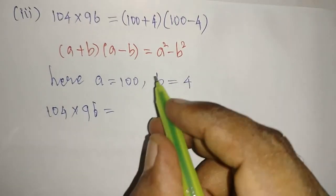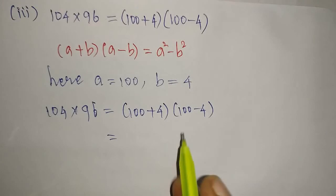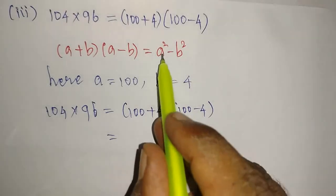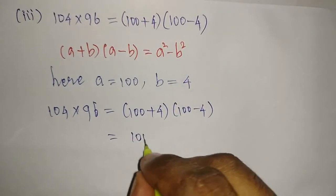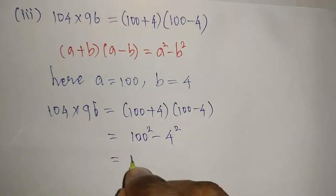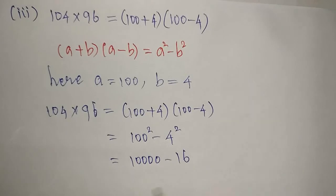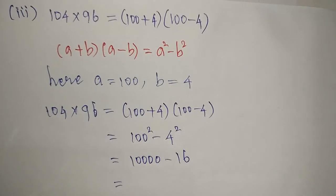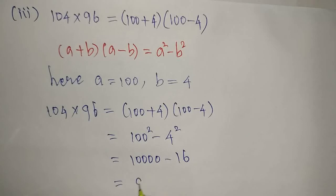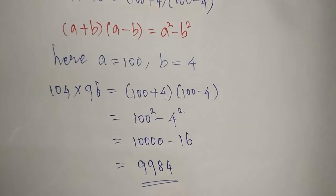So 104 into 96 equals a squared minus b squared, which is 100 squared minus 4 squared. 100 squared is 10,000 and 4 squared is 16. If we subtract, we get 9,984. That is our required answer for 104 into 96.